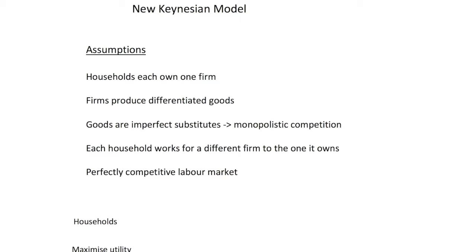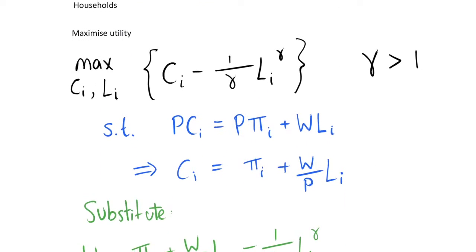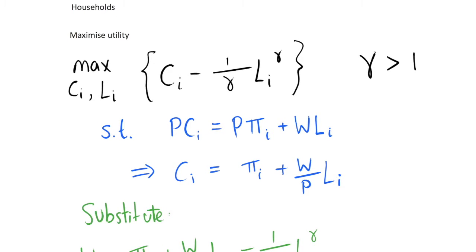In the previous video we looked at the assumptions for the New Keynesian model, and in this video I'm going to derive the model effectively using a number of assumed functional forms. We'll solve the household and firm maximization problems and show the key equations, and in a future video we can continue to round this off with more evaluation of the New Keynesian model.